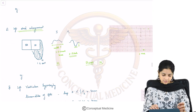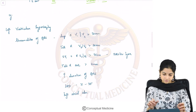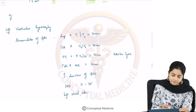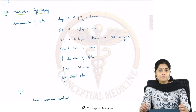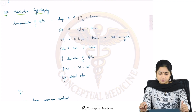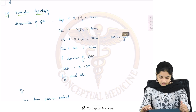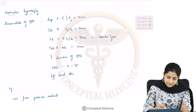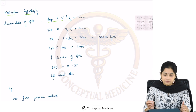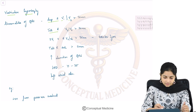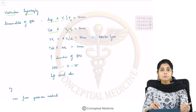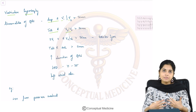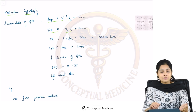Now let us go to ventricular enlargement, which is ventricular hypertrophy. We will start with left ventricular hypertrophy. In left ventricular hypertrophy, what you will find is deep S waves in V1 and V2, and tall R waves in V5 and V6. Remember this basic principle and then we will go to all other aspects of LVH.